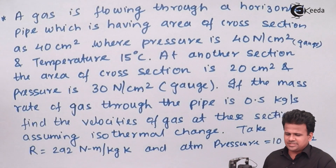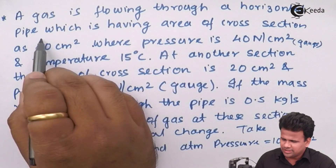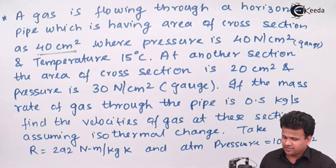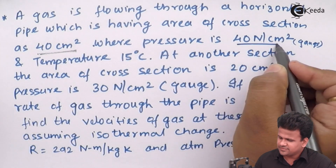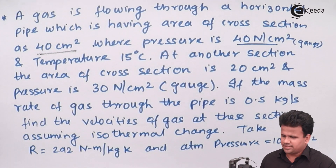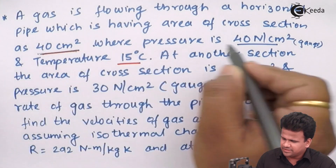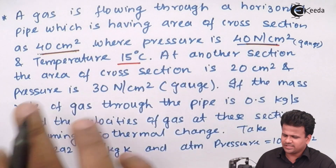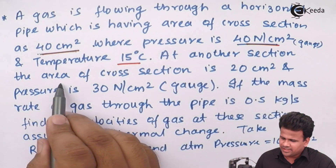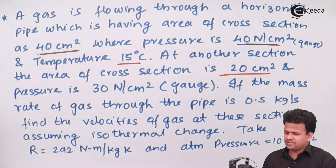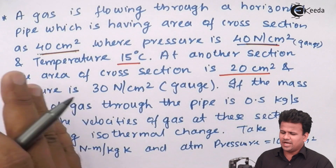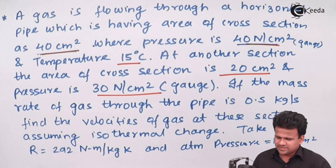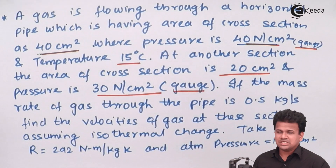We have a problem which states that a gas is flowing through a horizontal pipe having area of cross section as 40 centimeter square, where the pressure is given as 40 Newton per centimeter square and the temperature is 15 degree Celsius. At another section, the area of cross section is 20 centimeter square. The area is decreasing and the pressure is 30 Newton per centimeter square gauge pressure.